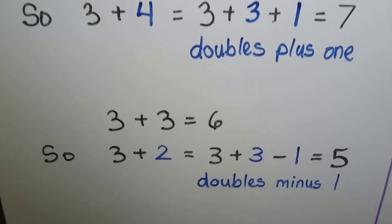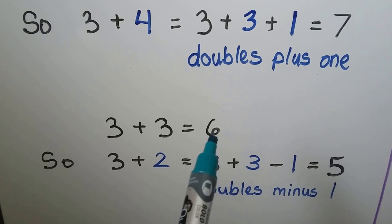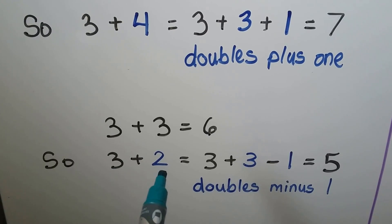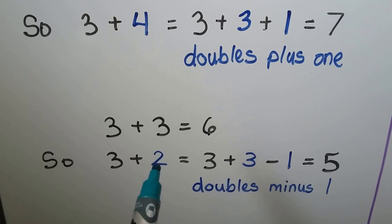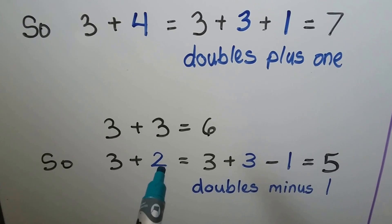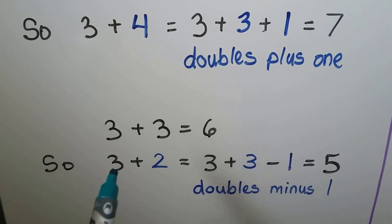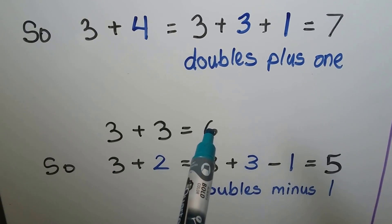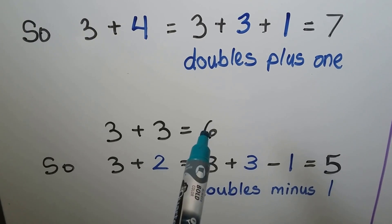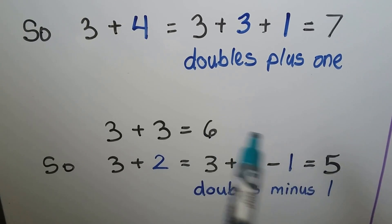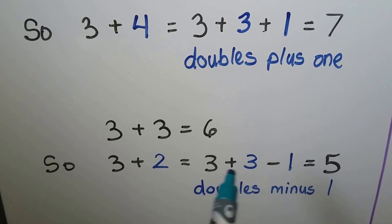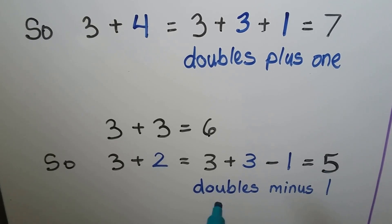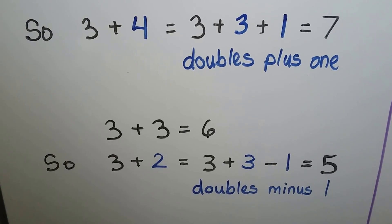Doubles minus one uses three plus three equals six, and because we're going to add three plus two, this two is one less than this three. The sum will be one less than this sum. One less than six is a five. Three plus three is six, minus one is five. Doubles minus one.